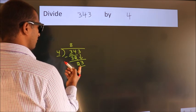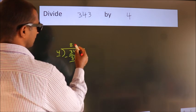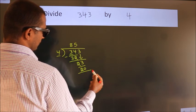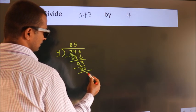A number close to 23 in 4 table is 4 times 5, 20. Now, we subtract. We get 3.